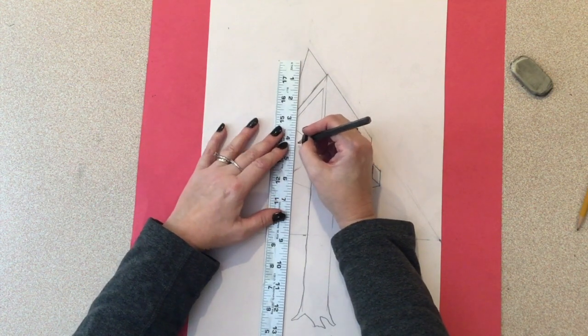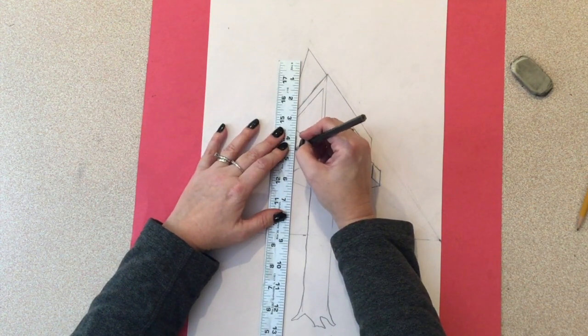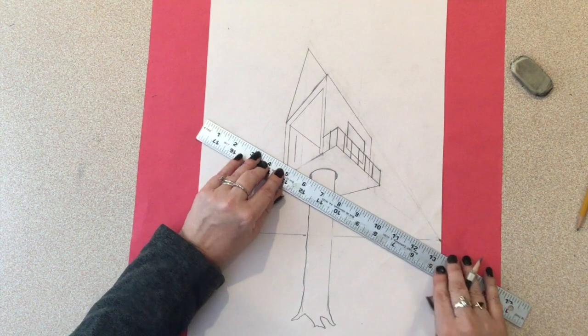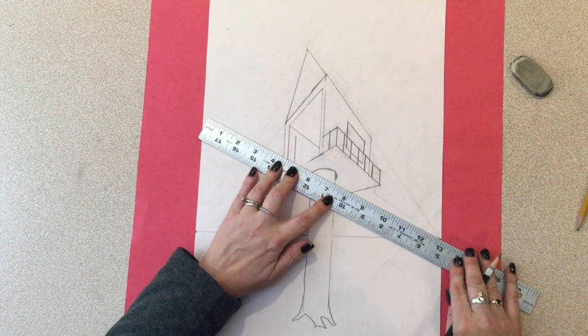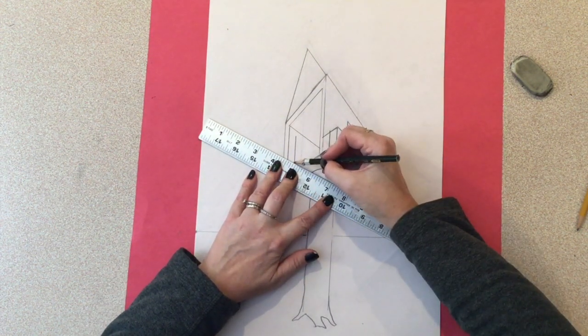To draw a window inside, I started the same way I would outside with a vertical line with a top and bottom that connected to the vanishing points on the right.